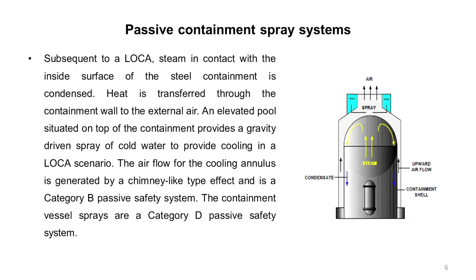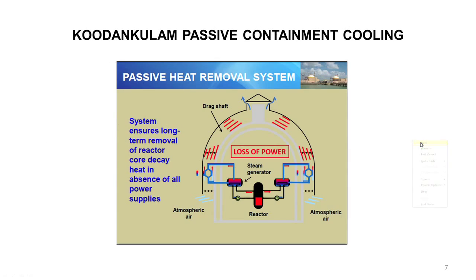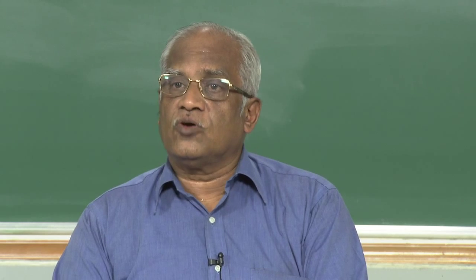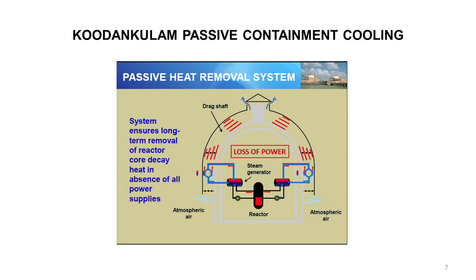This sort of system has been used in many pressurized water reactors. Here I show you the passive containment cooling system adopted in the Kudungulam reactor, which is in operation in Tamil Nadu. There is a lot of annular space in the actual building, so atmospheric air enters, picks up heat from the containment, and goes out. Even when there is a power failure, you are able to do this by natural convection — you are not dependent on any electrical or mechanical power.